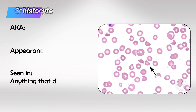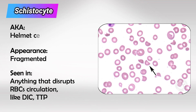Next we have schistocytes, and these are commonly referred to as helmet cells. These are basically broken RBCs. We see these fragments in many diseases — basically everything that can destruct RBCs.